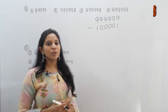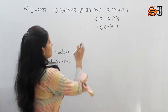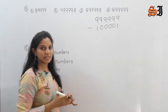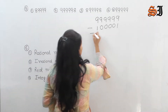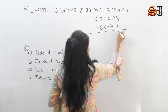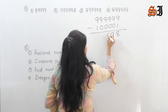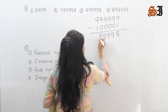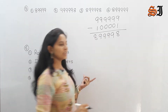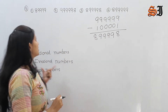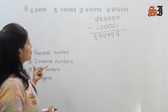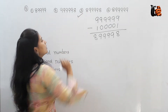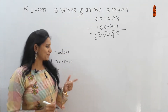The remainder means we will subtract it. 999999 minus 100001: 9 minus 1 is 8, then 9, 9, 9, 9, 9. So the answer is 899998. The third option is our correct answer.